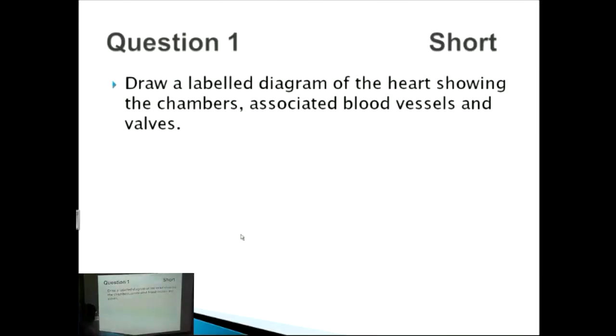We've got a couple of cardiac questions here about the heart. This is about topic 6.2. The first one is drawing a labelled diagram of the heart showing the chambers, associated blood vessels and valves. With these short questions you're looking for about four points, at least four maybe even five points to get the maximum amount of marks.